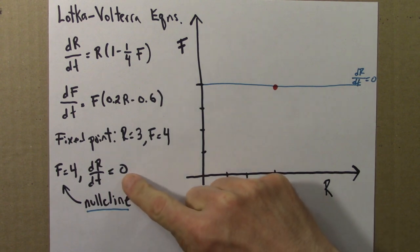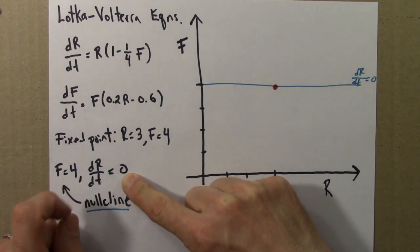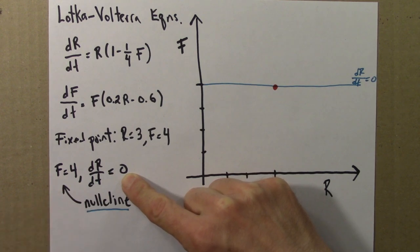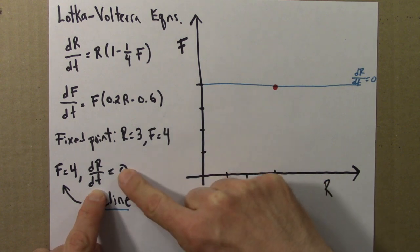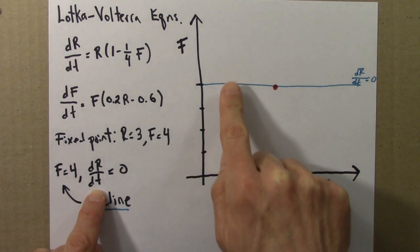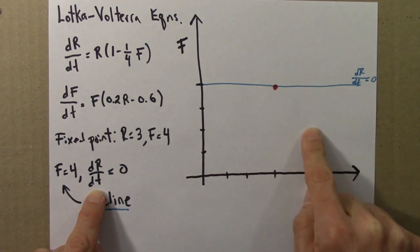So this is dr/dt equals 0. So here, solution curves must be going straight up or straight down. Because they can't go side to side, the rabbit population is constant. So the solutions have to either go up or down.